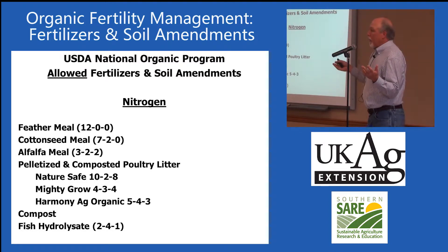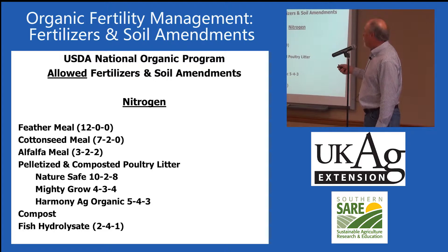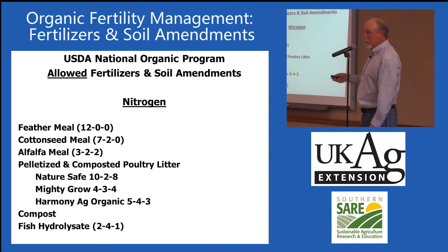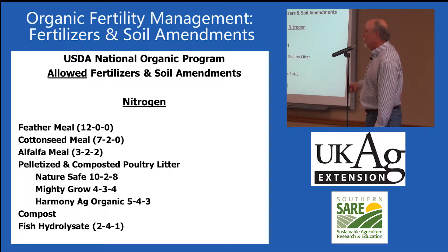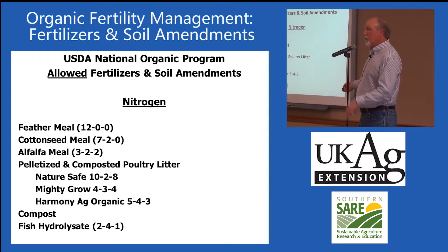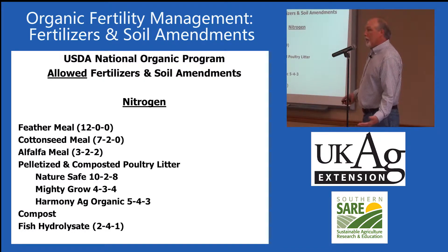On nitrogen, you have a lot of materials. Feather meal, cotton seed meal, alfalfa meal, and a whole series of pelletized and composted poultry litter products. Nature Safe, Mardi Gros, and Harmony are three popular ones that I feel confident will do a good job. Compost and fish hydrolysate are also options — a lot of people talk about fish emulsion, but fish hydrolysate is the more practical and widely used version.